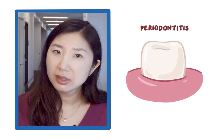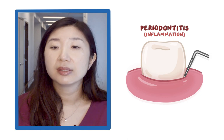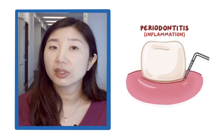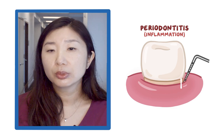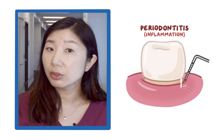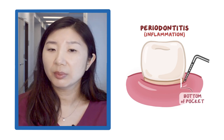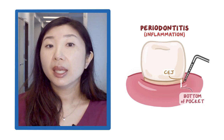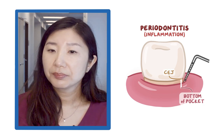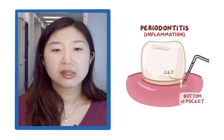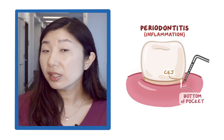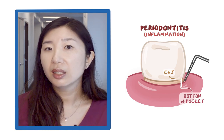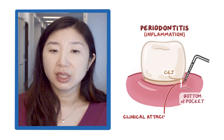If there is periodontitis at work — continuous persistent inflammation, a host response, and eventual attachment loss — the most coronal aspect of attachment, which is equivalent to the bottom of the pocket depth, will move from the CEJ apically down along the root. You measure this distance of how much attachment you lost from the CEJ to the bottom of the pocket, and this gives you the clinical attachment loss.